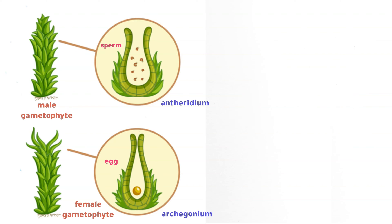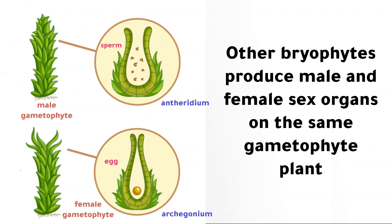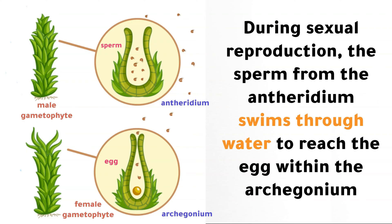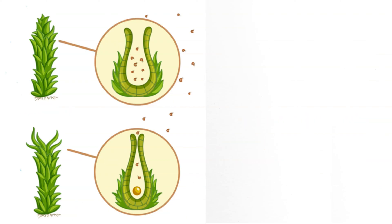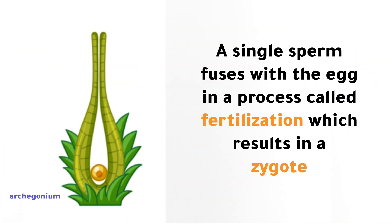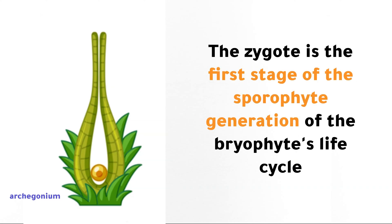Other bryophytes produce male and female sex organs on the same gametophyte plant. During sexual reproduction, the sperm from the antheridium swims through water to reach the egg within the archegonium. A single sperm fuses with the egg in a process called fertilization, which results in a zygote. The zygote is the first stage of the sporophyte generation of the bryophyte's life cycle.